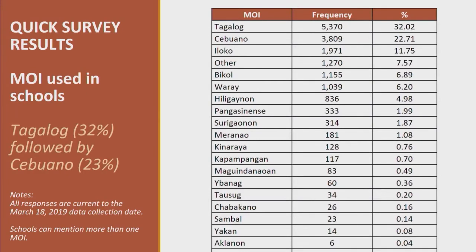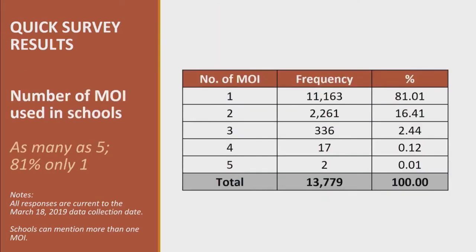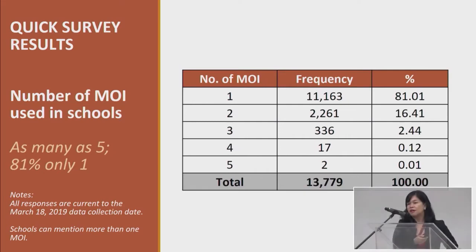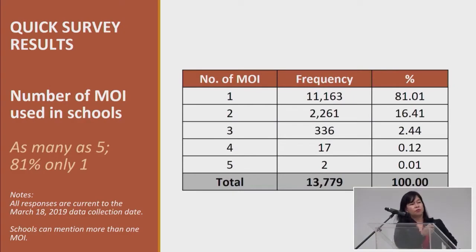Regarding the medium of instruction being used, we found that Tagalog has 32% — that's the MOI being used inside school and also the mother tongue of students — followed by Cebuano. However, there were many other MOIs being employed in schools. What was interesting was that we found as many as 5 MOIs being used by a particular school, though this did come out in the online survey.